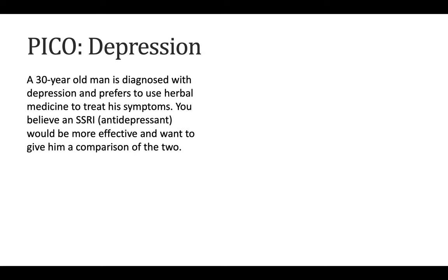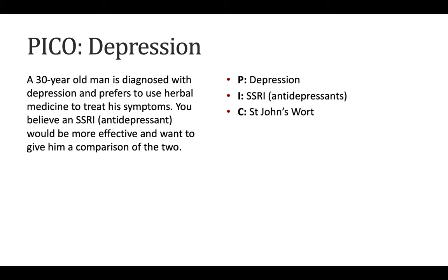For our first example, a 30-year-old man is diagnosed with depression and prefers herbal medicine to treat his symptoms. You believe an SSRI would be more effective and want to give him a comparison of the two. Using PICO, the P — the central problem — is depression. The intervention the clinician is suggesting is an SSRI, commonly known as an antidepressant. The patient is interested in herbal treatment, so we compare it to St. John's Wort, a popular herbal supplement for depression. Ultimately we want to know about the effectiveness of these two treatments to reduce depressive symptoms.